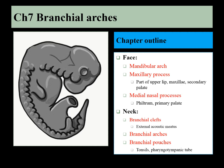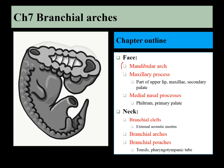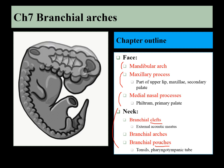Chapter 7: The branchial arches. In this chapter, we'll learn about the mandibular arch, which gives rise to the mandible, and the maxillary process, which forms off the mandibular arch and makes part of the upper lip, the maxillae, and the secondary palate. The primary palate and the philtrum are made from a structure called the medial nasal processes, which will fuse into an intermaxillary segment. We'll then move on to some other structures associated with the branchial arches down in the neck, including clefts found on the outside, which form the external acoustic meatus, and pouches found on the inside, which make the tonsils, the pharyngeotympanic tube, and some other structures.